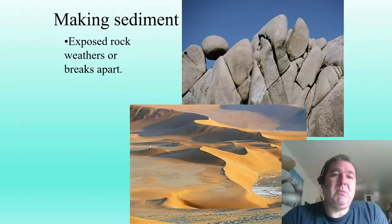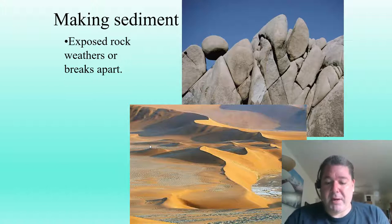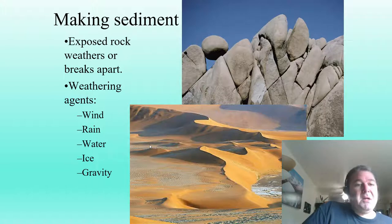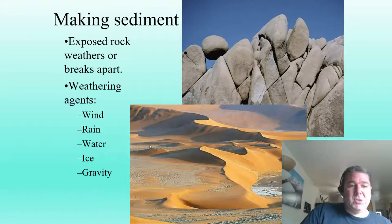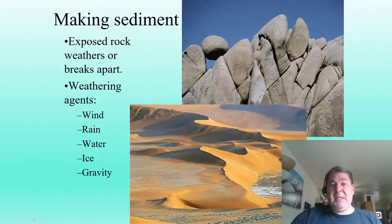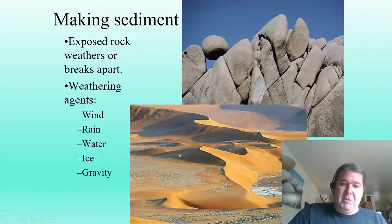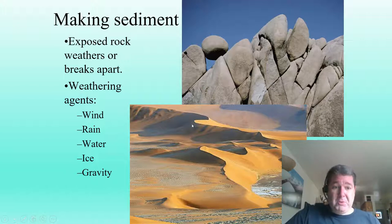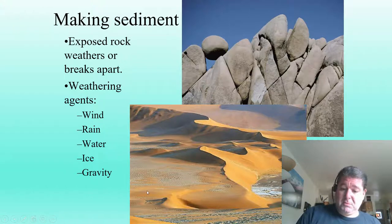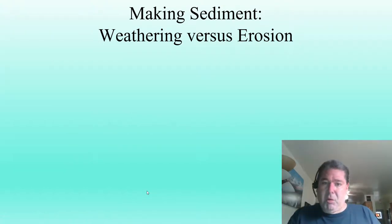To make sediment, we have exposed rock that's going to weather or break apart. Agents of this weathering include wind, rain, water, ice, gravity, and such. Here we see at the top a piece of granite that is weathering away, and then kind of an end product of weathering — nice tan sand dunes comprised primarily of quartz, which is a very stable mineral. To make sedimentary rocks, we must make sediment.